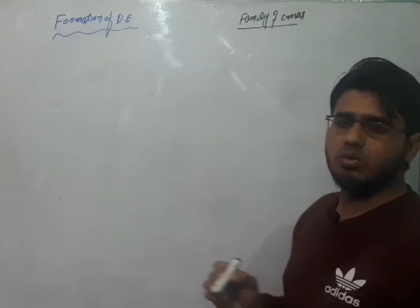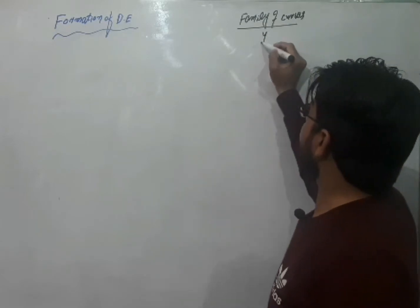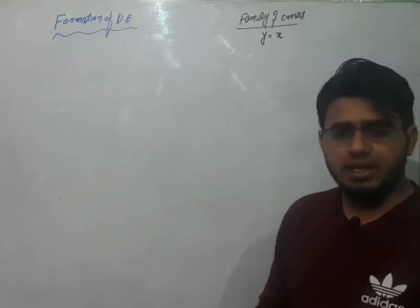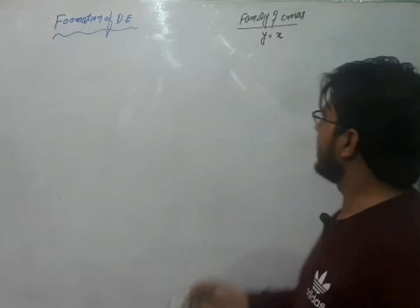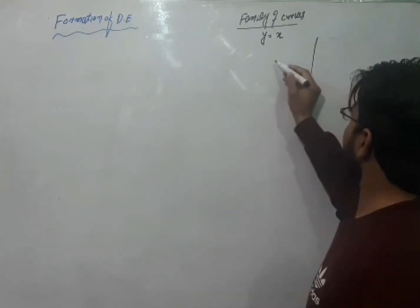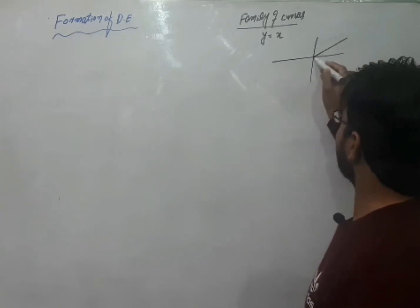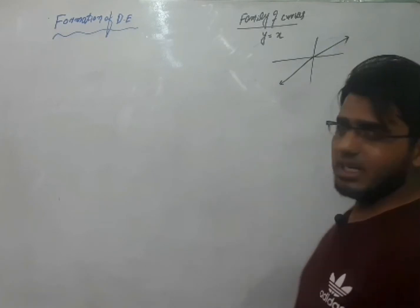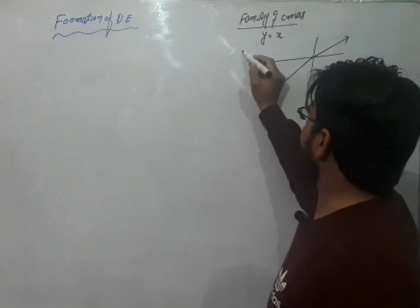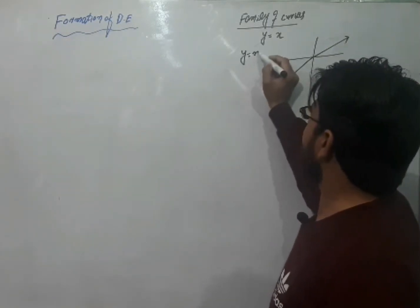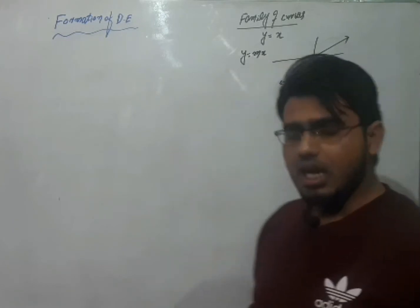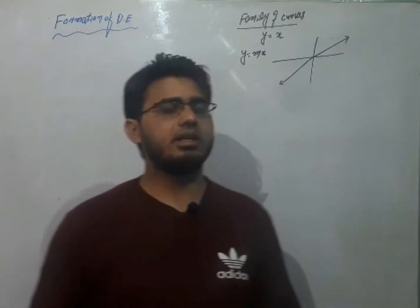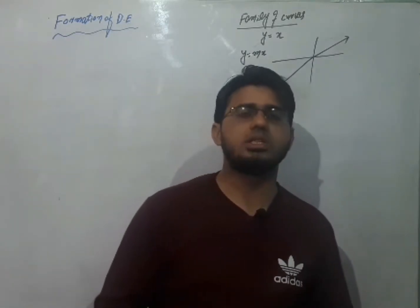अगर मैं यहाँ पर लिखूँ Y is equal to X, यह हमारे पास एक line है — जो center में से pass कर रही है, first और third quadrant को bisect कर रही है. लेकिन अगर मैं यहाँ पर लिखूँ Y is equal to MX, अब M यहाँ पर आपके पास एक arbitrary constant है जिसकी value को हम change कर सकते हैं.